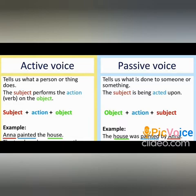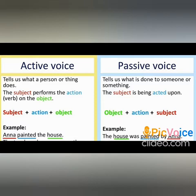Our focus will be only on the subject and the action, and we won't focus much on the object. See the example sentence: Anna painted the house. In this example, Anna is the subject, painted is the verb, and the house is the object. Our focus will be on Anna painted — who painted is more important here.